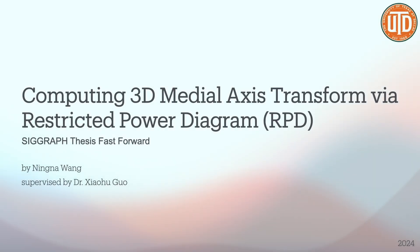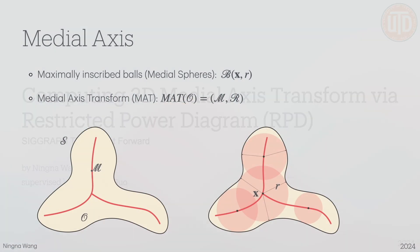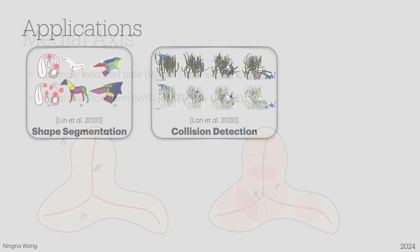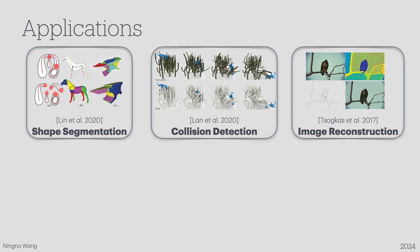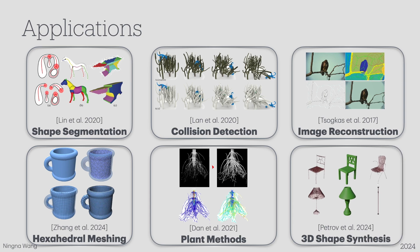Hello, I'm Nina, a PhD student at the University of Texas in Dallas. My research focuses on computing the 3D medial axis transform via the restricted power diagram, RPD. The medial axis is a type of skeleton consisting of the centers of maximum inscribed spheres, often called medial spheres. Each touches the surface at two tangent points. The set of these spheres' centers and radii is known as the medial axis transform, MAT. There are many applications of medial axes, such as 3D object segmentation, collision detection, image reconstruction, hexahedral meshing, blend methods, and 3D shape synthesis.